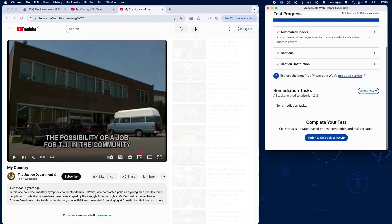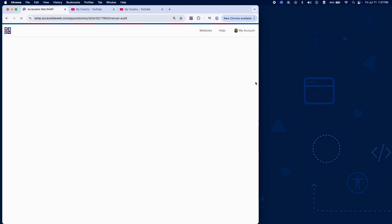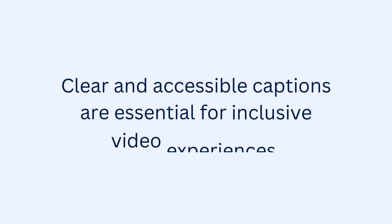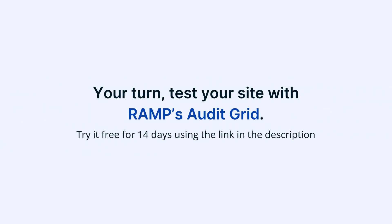And that completes testing for Success Criterion 1.2.2 using RAMP's Audit Grid and Chrome extension. Clear and accessible captions are essential for inclusive video experiences. Now it's your turn — test your site with RAMP's Audit Grid. Try it free for 14 days using the link in the description.